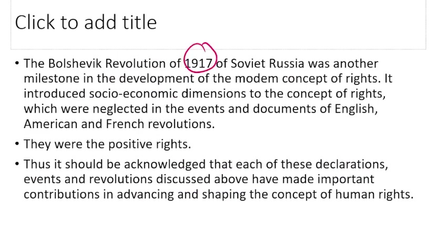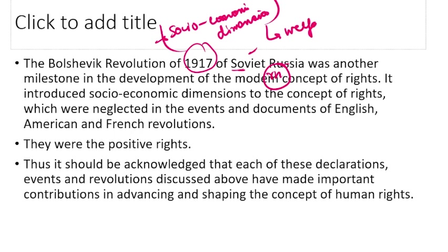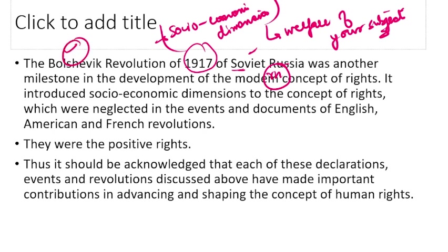The Bolshevik Revolution of 1917 in Soviet Russia was also a milestone in the development of the modern concept of rights. It introduced the socio-economic dimension of rights — meaning the state must maintain the welfare of its subjects, ensure economic justice through equal distribution of resources, and provide social justice equally to every member of society. This socio-economic dimension was not present in the American and French revolutions.